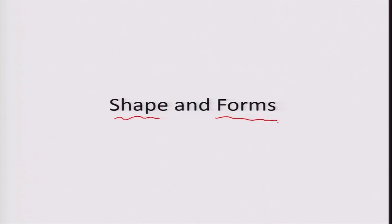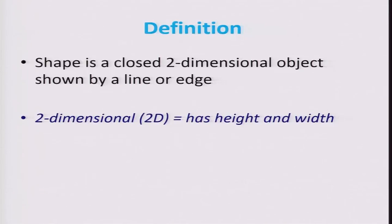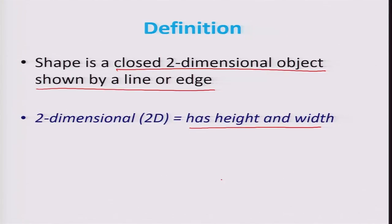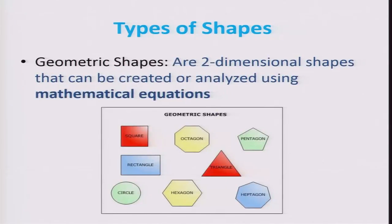Looking at definitions related to shapes and forms — these are two very important aspects for the aesthetic design of any product. A shape can be defined as a closed two-dimensional object, typically shown by a line or an edge. A two-dimensional object has height and width. For example, a square, octagon, triangle, hexagon, or rectangle — these are all different shapes, limited to one plane with only two dimensions.